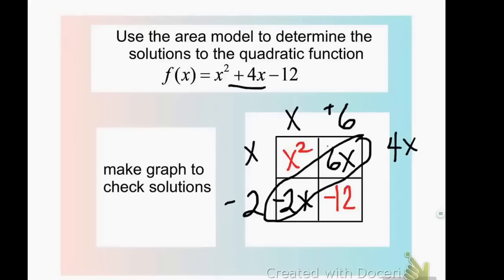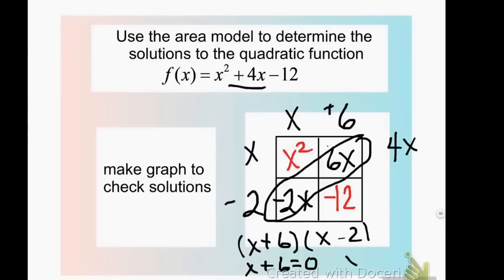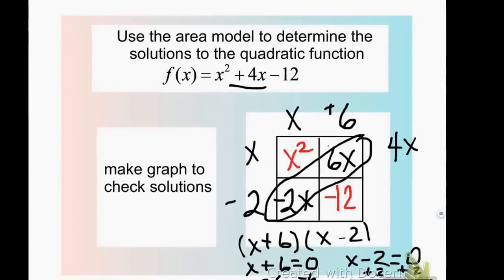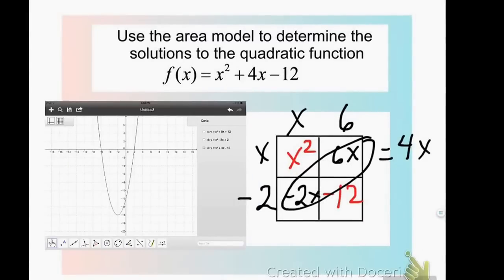So the intercept form is x plus 6 times x minus 2. Setting each factor equal to 0: subtracting 6 gives x equals negative 6, and adding 2 gives x equals 2. On the next slide with the graph, the intercepts are at negative 6 and positive 2, confirming the answer is correct.